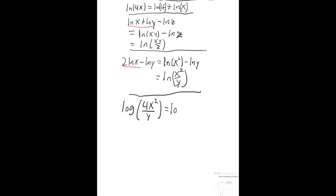So first I'm going to use my subtraction rule. This will be log of 4x squared minus log of y. Now, the log of y, that's about as simple as it can get. The log of 4x squared, I can break that apart further. It's 4 times x squared. So let's go log of 4 plus log of x squared. And I'm still subtracting log of y.